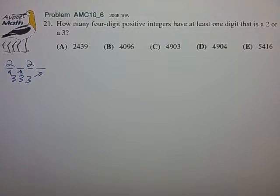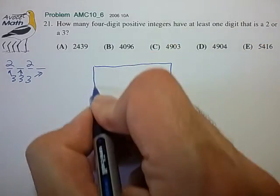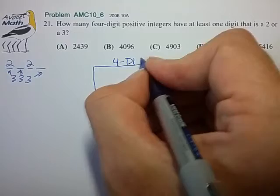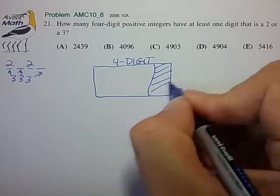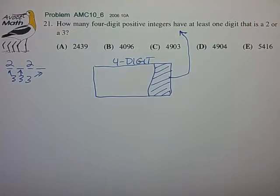So let's try to see if we can approach this from a different direction and recognize that this set that we're trying to count is a subset of all four-digit numbers. So we'll represent this set that we're trying to count as this shaded portion here to indicate all this stuff up there.